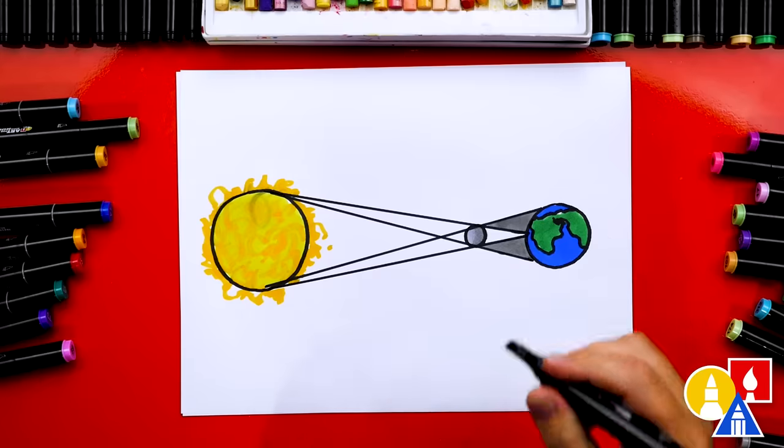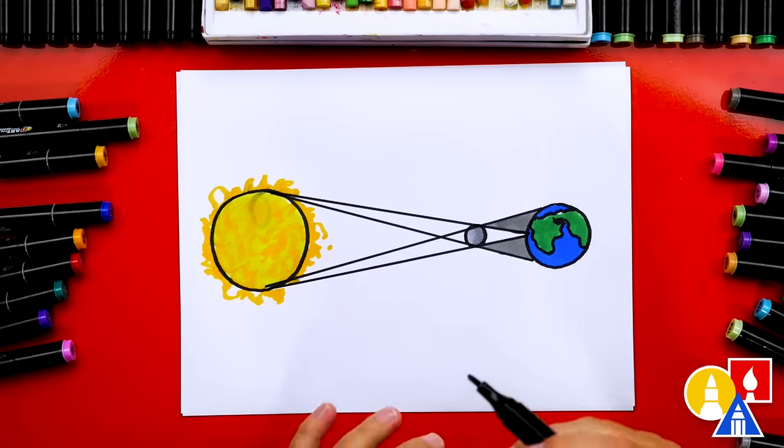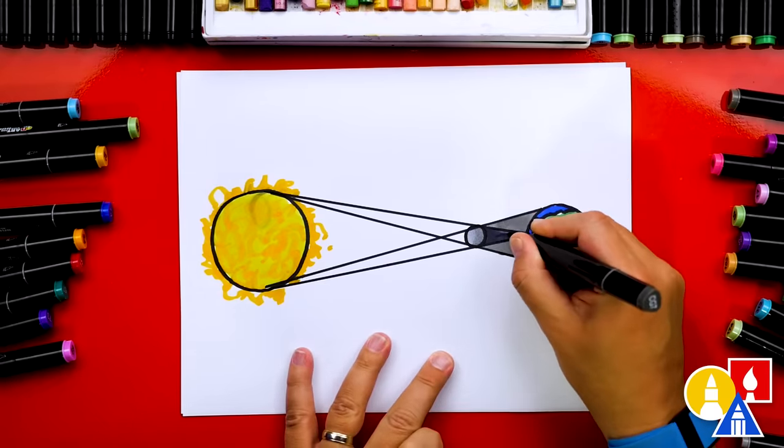We're going to color in these shadows but this inside triangle is the full eclipse. This is the part that will shine on the earth where the sun is completely blocked out and for that shadow since it's darker or completely blocked out I'm going to use a darker gray for that triangle.